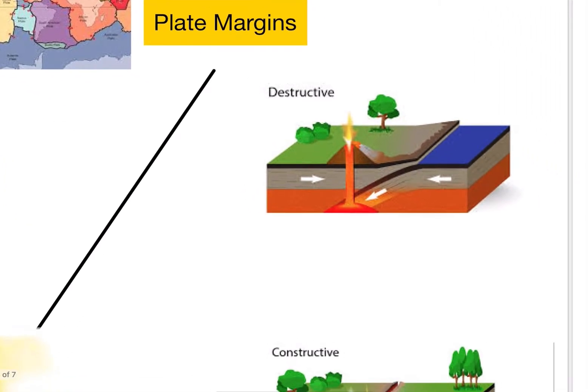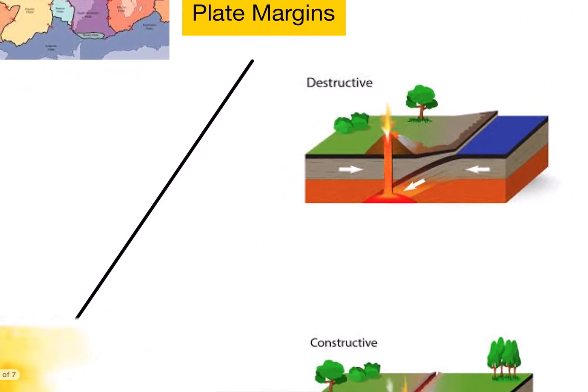We have three main types of plate margin that you need to know for the exam. The first type is your destructive plate margin. At a destructive plate margin, we've got plates that are moving towards each other. What's happening here in the diagram is that we have one plate, our oceanic plate, our denser plate in this case, that's being forced down or subducted beneath that continental plate that we can see here.